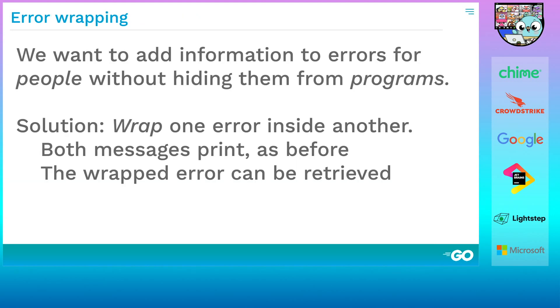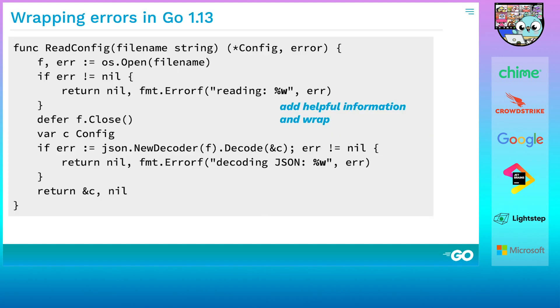And here's where error wrapping comes to the rescue. We'll keep the original error when we create a new one. Then people can see the full error message, and programs can inspect the separate errors. The first step is easy. Replace those %v's in fmt.errorf with %w's. %w will construct the same error string, but will retain the corresponding argument, wrapping it in the returned error.